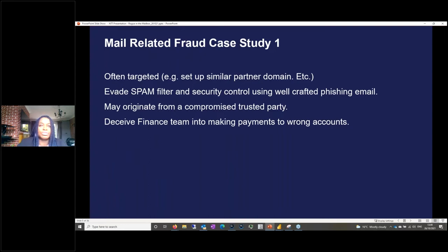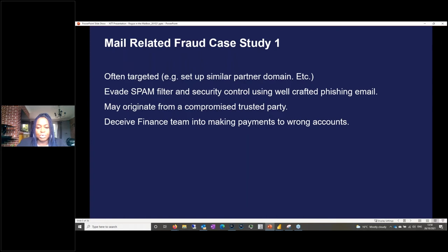I'm going to reference two case studies from the many we've done at NTT. In the first case study, the attacker didn't actually own the email box. They obtained the email address of the customer and used it with a fictitious partner email — the partner had probably already been compromised. They convinced the finance team that they were the legitimate partner of the company, and got them to change account numbers, redirecting payments to themselves.